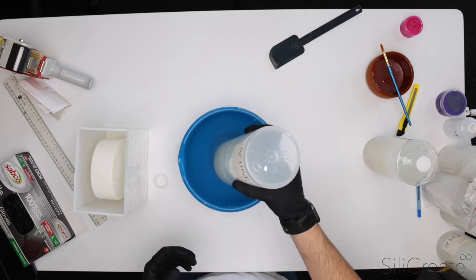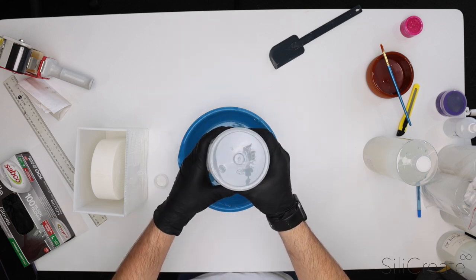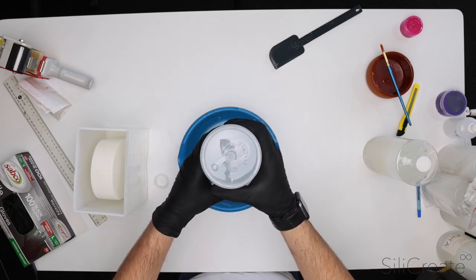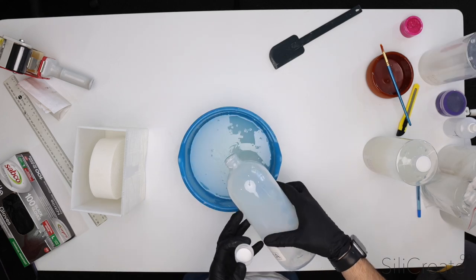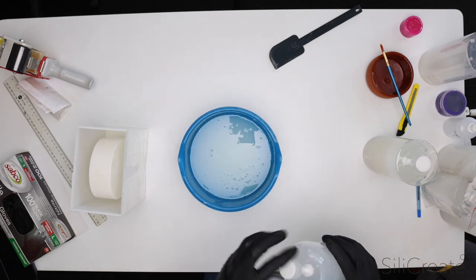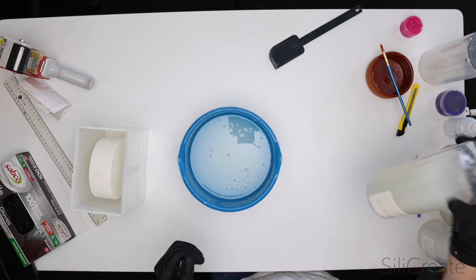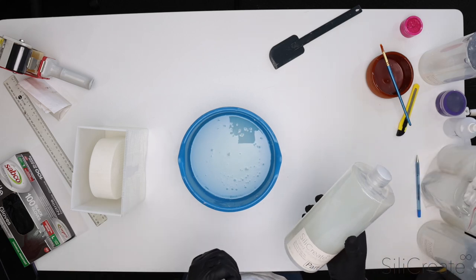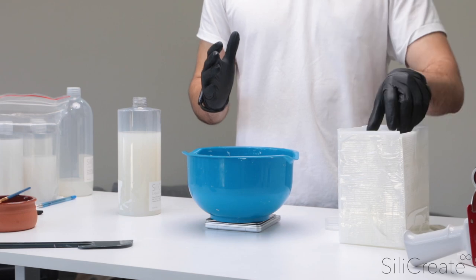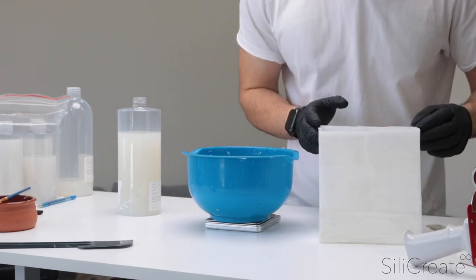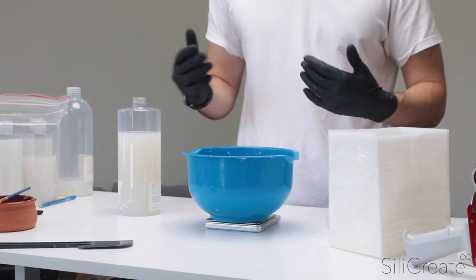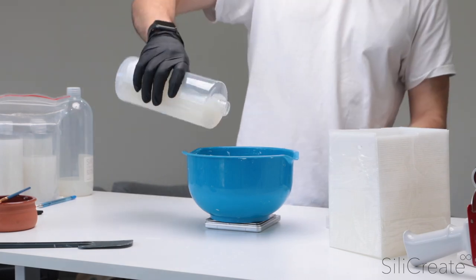So, we'll go in with the A first. Pretty much empty this bottle. I've got another bottle. Alright, I'm at 900 exactly. It's always nice when you get it exact. Now, I'm going to go in with 900 of the part B. And this is where everything needs to, we need to move fairly quickly now. Because once it starts, we've got to start mixing and get it poured in the next five minutes. So, I'm going to go in with the B.